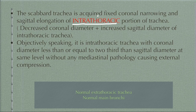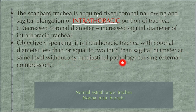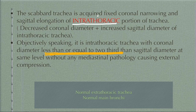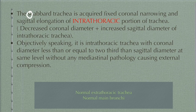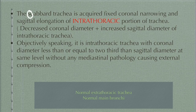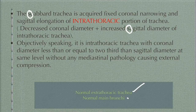The objective definition: it is an intrathoracic trachea with a coronal diameter less than or equal to two-thirds of the sagittal diameter at the same level, without any mediastinal pathology causing external compression. The key value to remember is less than or equal to two-thirds. As a mnemonic — 'S for scabbard, S for sagittal' — the sagittal diameter is increased. Note that only the intrathoracic portion is involved; the extrathoracic trachea and main bronchi are normal.